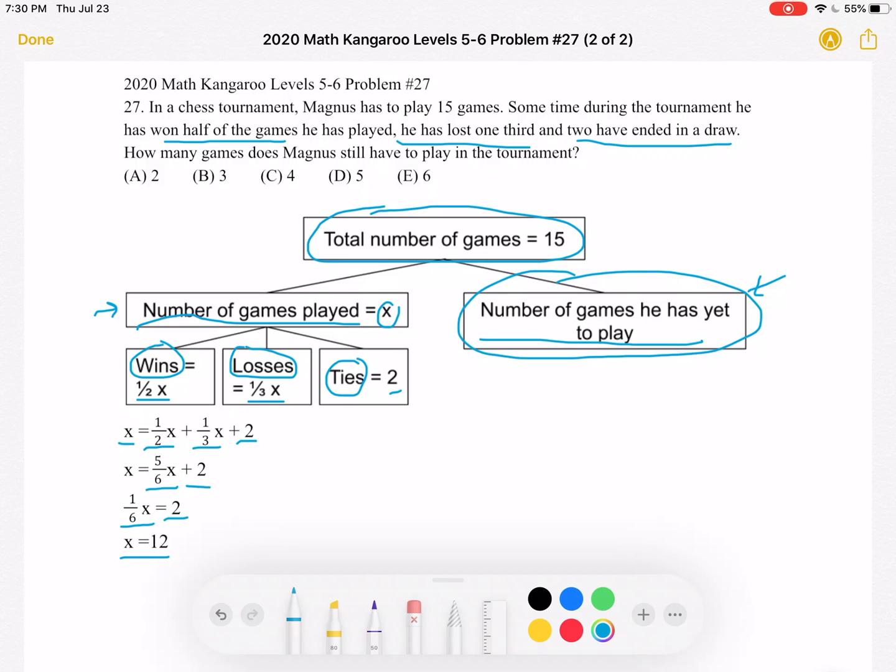Great, we found what X is. X is 12. But keep in mind, like we said, we're looking for this number, the number of games he has yet to play.